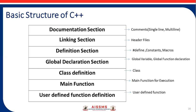The global declaration section is where we declare global variables or global functions. Global variables are those declared before or outside the main function. Next is the class definition section, where we mostly use the class keyword.